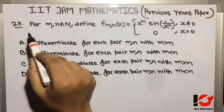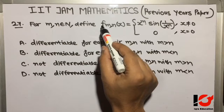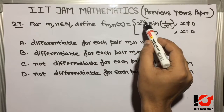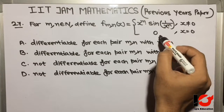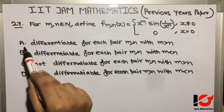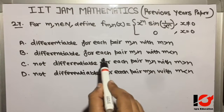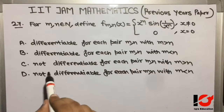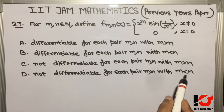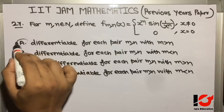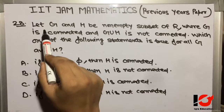Question 27: For m, n ∈ ℕ, define f_{m,n}(x) = x^m * sin(1/x^n) for x ≠ 0, and 0 for x = 0. Is f_{m,n} differentiable? Option A: differentiable for each pair (m,n) with m > n. Option B: differentiable for each pair with m < n. Option C: not differentiable for each pair with m > n. Option D: not differentiable for each pair with m < n. The required answer is Option A — differentiable for each pair (m,n) with m > n.